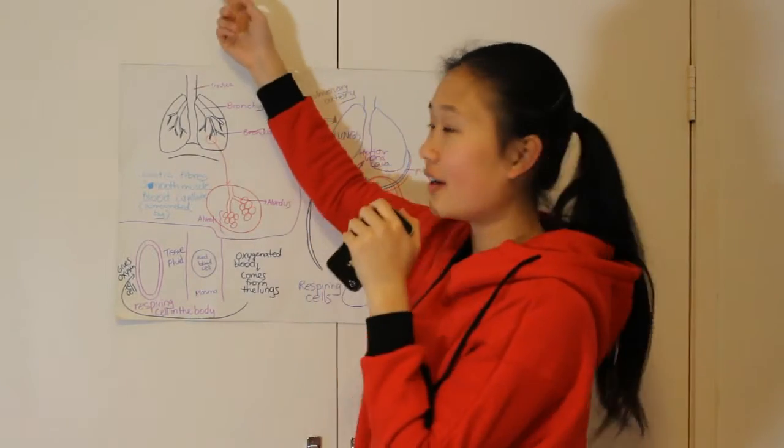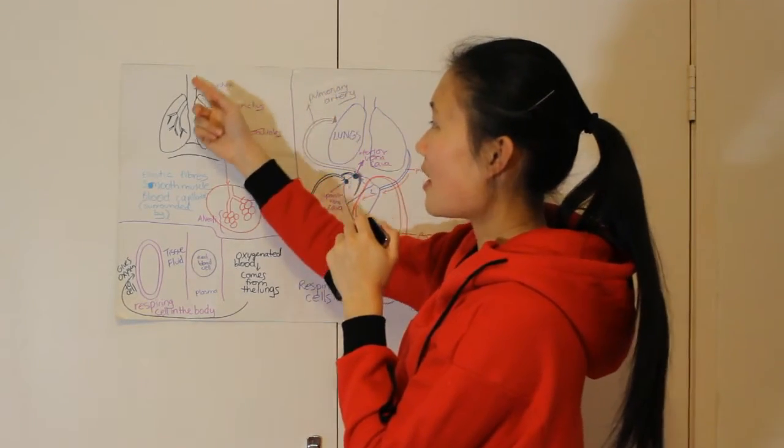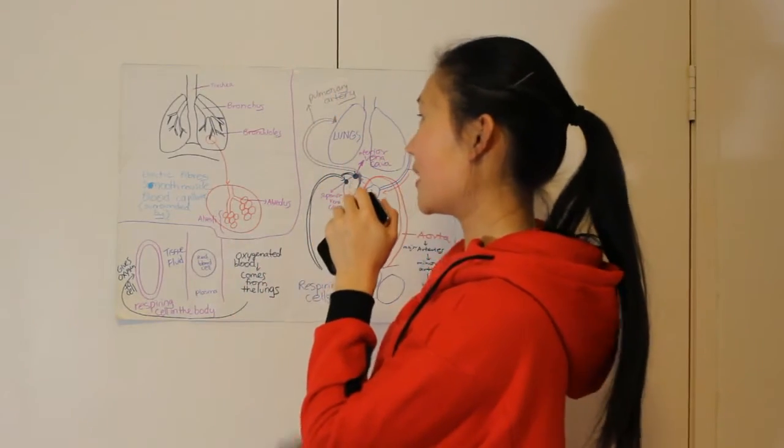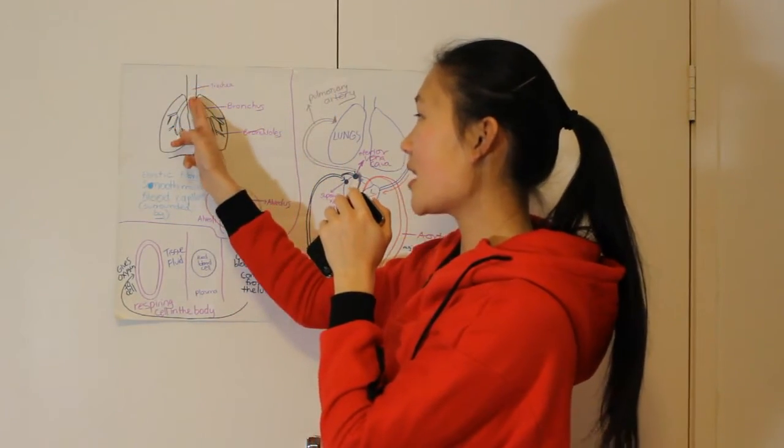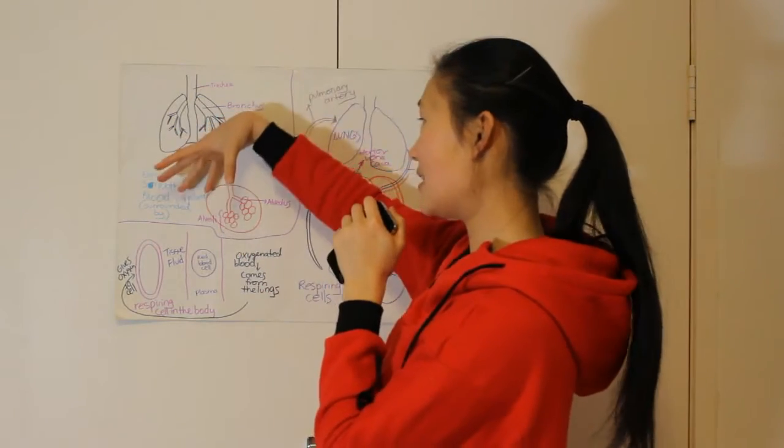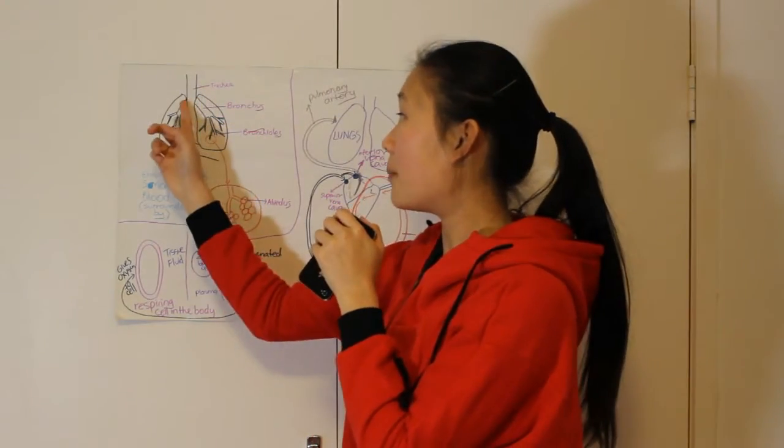The air you breathe in will come down through the trachea and then it is separated into bronchi.